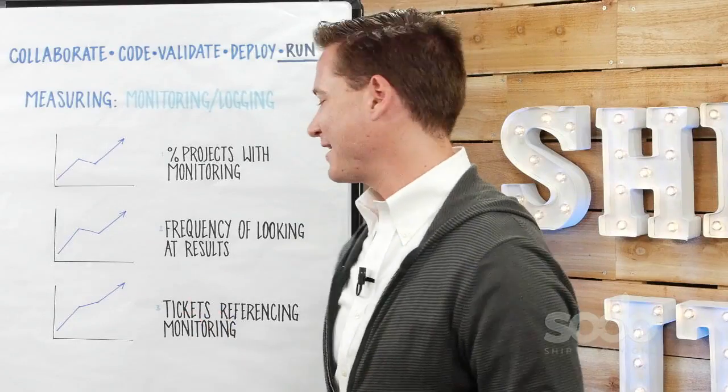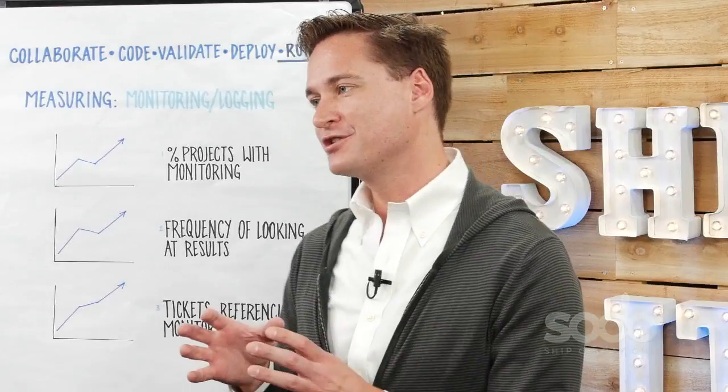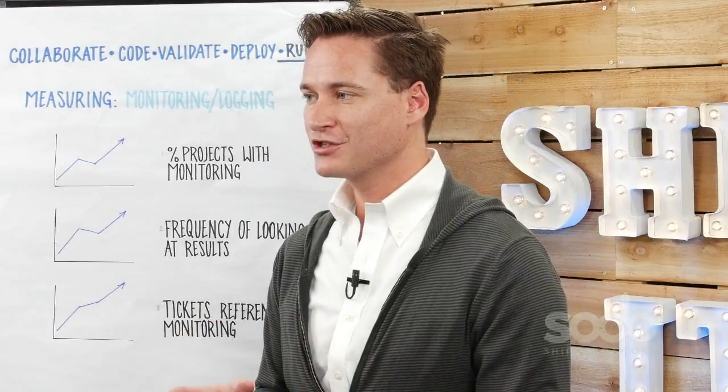Measurement 3: Look at the percent or number of tickets that reference the monitoring results or the logs. For example, tickets that say your error rate went over a certain percent — you should probably look at that, see what happens, and see if you can get it down. This should trend upwards and means that you're using the results of monitoring to improve your project and your technologies.